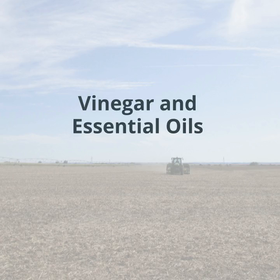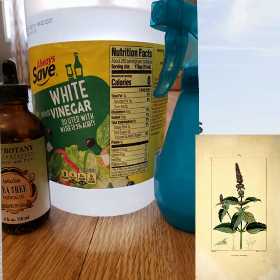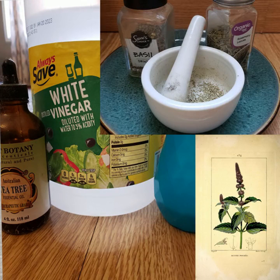A really great example of a naturally occurring set of pesticides are vinegar and essential oils. A lot of people will mix vinegar with things like tea tree oil, lemongrass, rosemary,